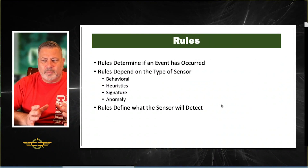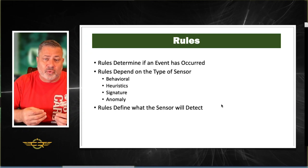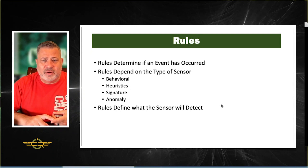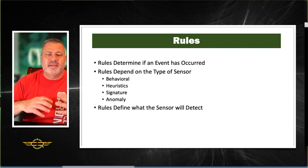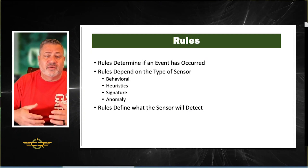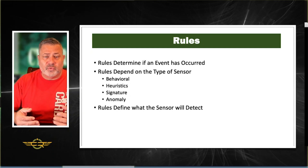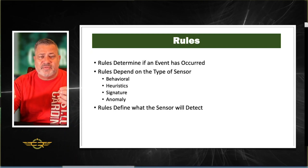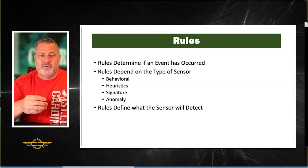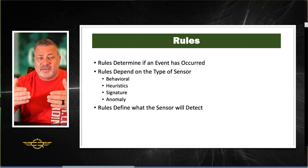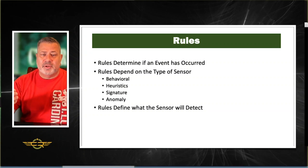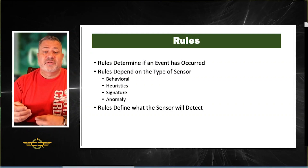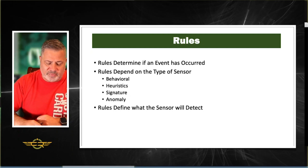Rules define the actions that the IDS or IPS will take. Rules help determine if an event has occurred and depend on the type of sensor being used — behavioral, heuristic, signature-based, or anomaly. Rules define what the sensor will detect and, in the case of prevention systems, what the sensor will react to. For example, if specific traffic patterns indicate a denial-of-service attack, the IDS or IPS will recognize it. Larger organizations often subscribe to services that provide rules, but you can also write and tailor them to your organization.